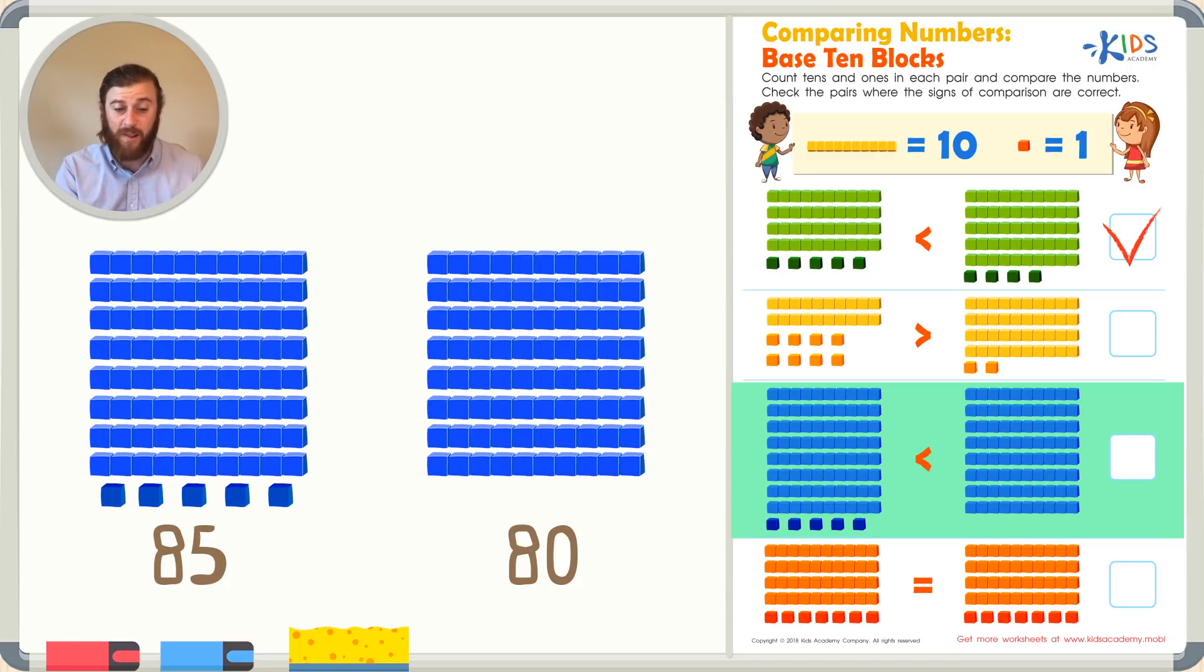So the number on the left, 85, is larger. But the comparison symbol shows that 80 is larger. And that's not correct. So we can't check this one is correct either.